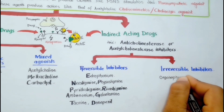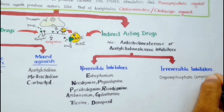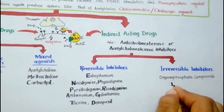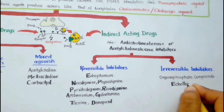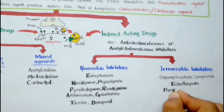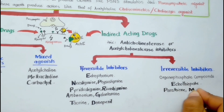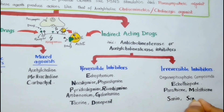The irreversible agents include organophosphate compounds such as echothiophate, parathion, malathion, sarin, and soman.